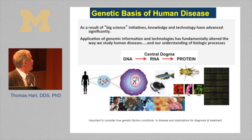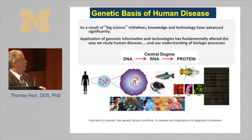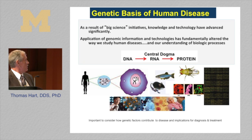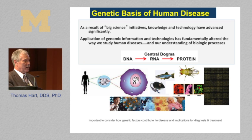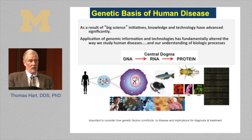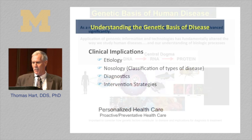As a result of these big science projects, the way we study human diseases is changing dramatically. In addition to studying human cells, we study different animal organisms — mice, zebrafish, the fruit fly — and we have high-throughput technologies for producing data. The emphasis is now on translation — what have you done for me lately clinically — but we also need to consider how genetic factors contribute to the diagnosis and treatment of diseases.